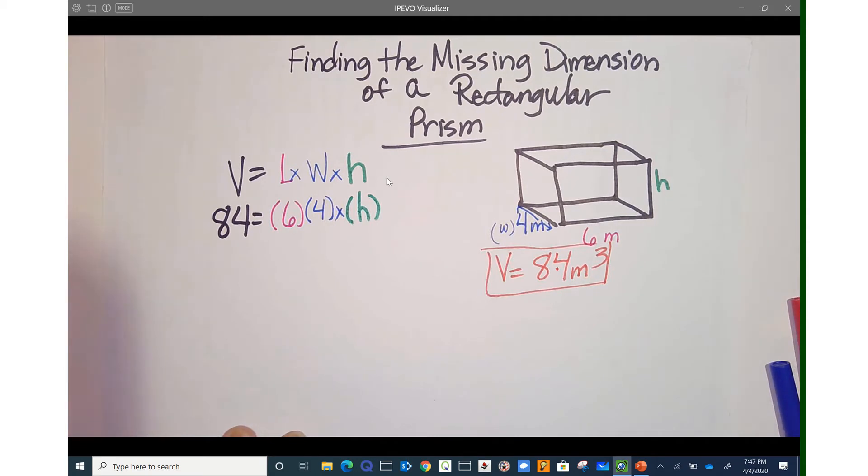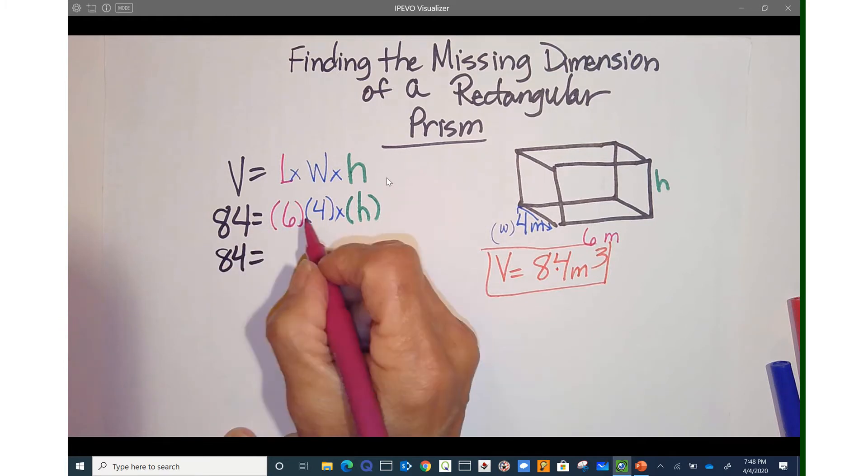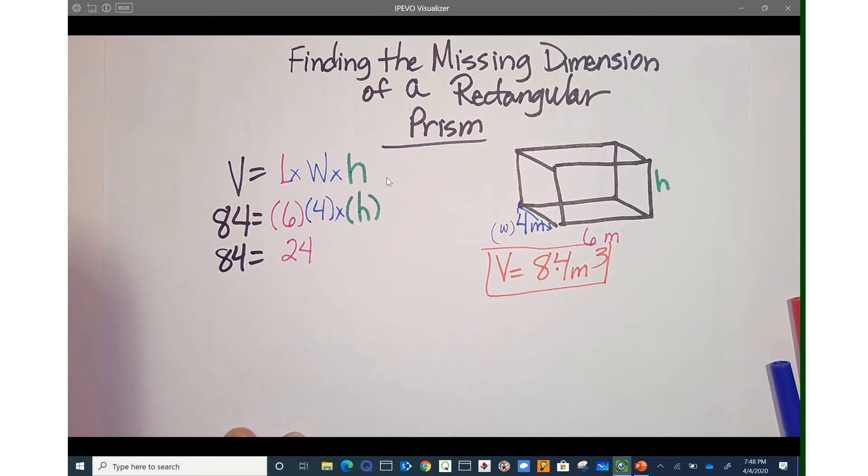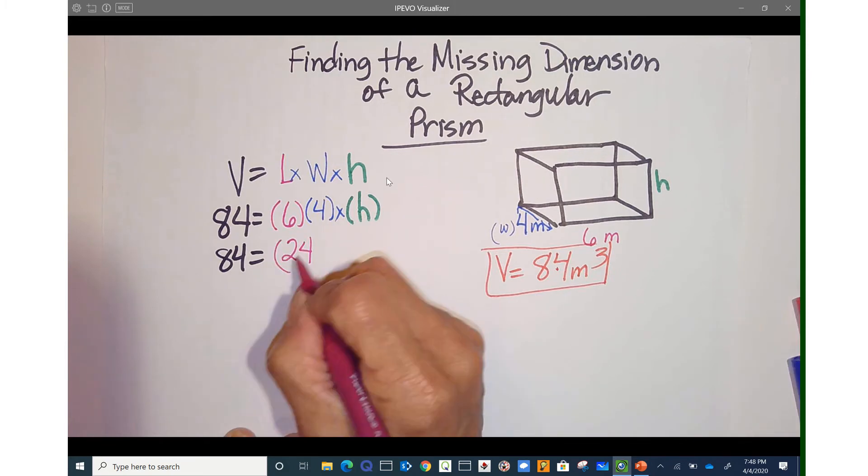There we go. Length times width times height. So now I'm going to multiply these two right here. 84 equals 6 times 4 is 24 times H. We don't know what H is, but we're going to bring it down here.